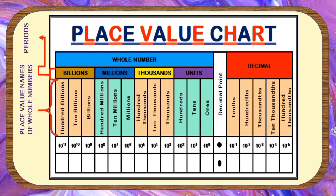This part is for the place value names of whole numbers. They are located at the left side of the decimal point, starting with the ones place: Tens, Hundreds, Thousands, Ten Thousands, Hundred Thousands, Millions, Ten Millions, Hundred Millions, Billions, Ten Billions, Hundred Billions, and so on.